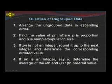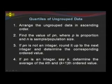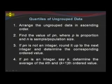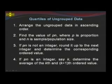The quartiles of ungrouped data are usually determined as follows. 1. Arrange the ungrouped data in ascending order. 2. Find the value of pn, where p is the proportion and n is the sample or population size. 3. If pn is not an integer, round it up to the next integer and determine the corresponding ordered value. 4. If pn is an integer, say k, determine the average of the k-th and (k+1)-th ordered values.